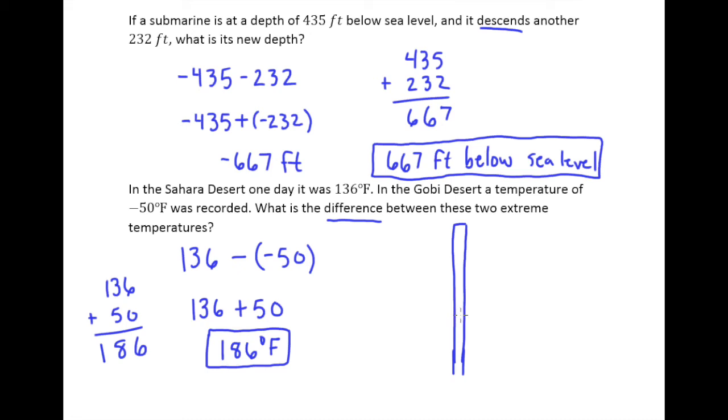Suppose right here is zero degrees Fahrenheit, and way up here is 136 degrees Fahrenheit. And then down here is negative 50 degrees Fahrenheit.